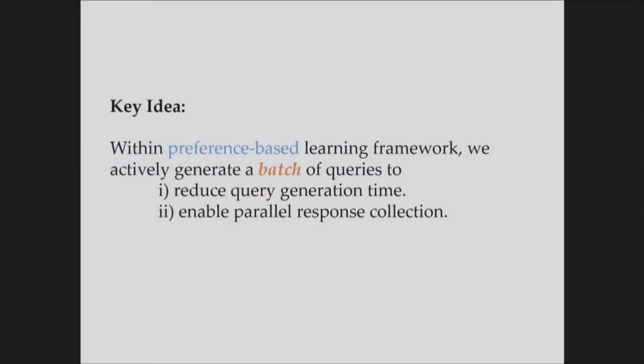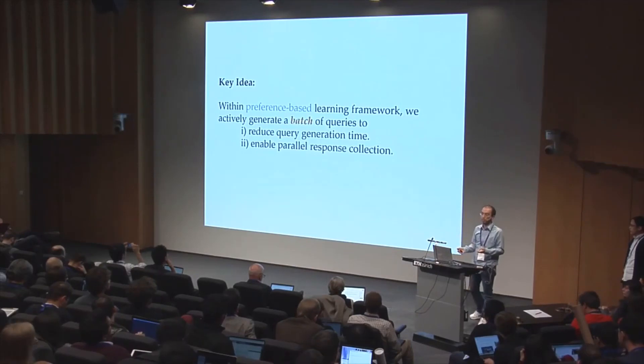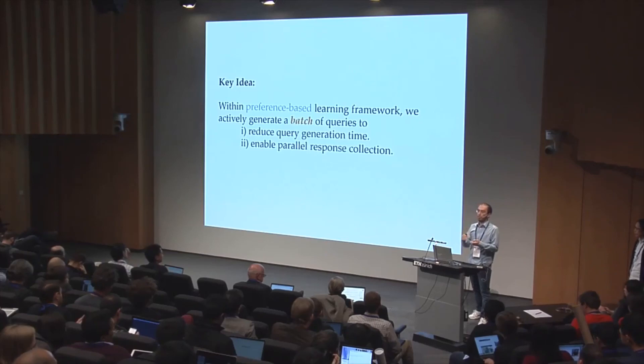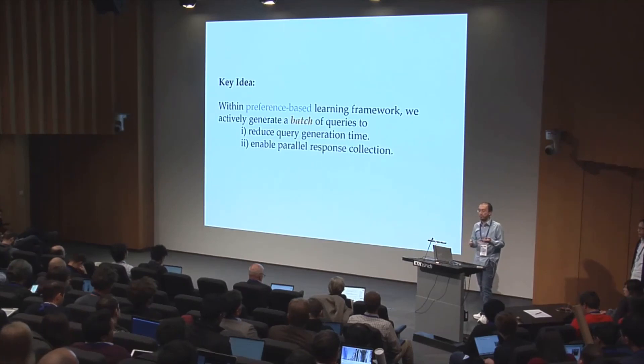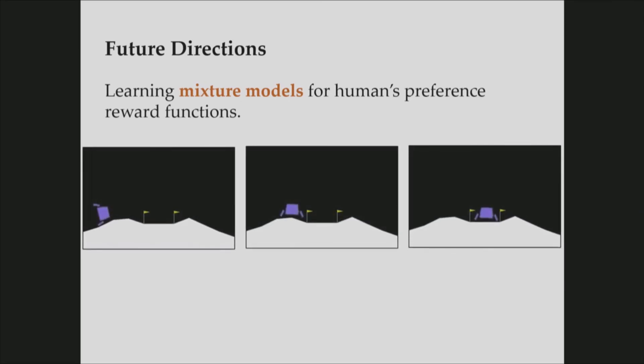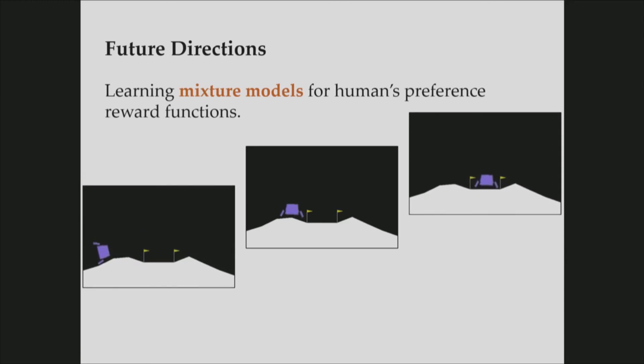So our key idea is to use pairwise comparisons to learn human preferences by generating batches of queries. In this way, we reduce query generation time and enable parallel data collection. In this work, we just learned preferences of individuals. But in fact, we could learn single reward function from a population by simply parallelizing our algorithm. And something we are currently considering is to learn multiple different reward functions from a population, which we can model as a mixture model. For that, we are thinking of using different query types. For example, we can use full rankings instead of pairwise comparisons. And this is something we are currently considering. Thank you very much for your attention.